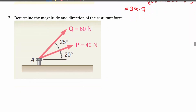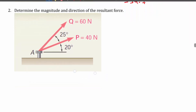Let us move into the second problem, which is the same kind of problem. Two forces are given: F1 = P = 40 N and F2 = Q = 60 N. The angle alpha between the two forces is given as 25°, so I am directly calculating the resultant FR.